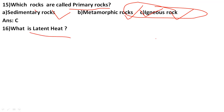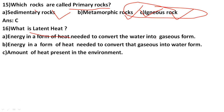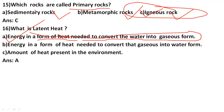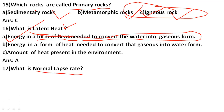What is latent heat? The correct answer is A: energy in the form of heat needed to convert water into gaseous form. So latent heat is the energy required to convert water into its gaseous form — the heat energy used in that conversion is called latent heat.